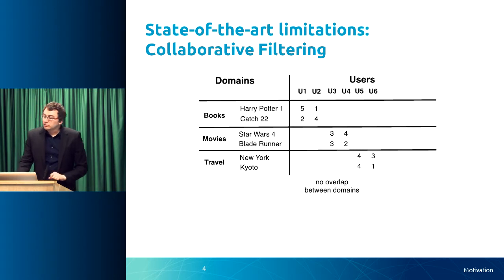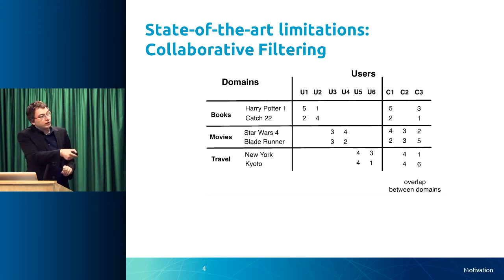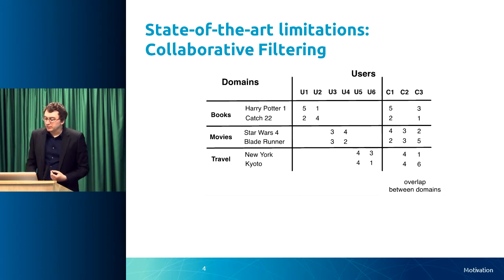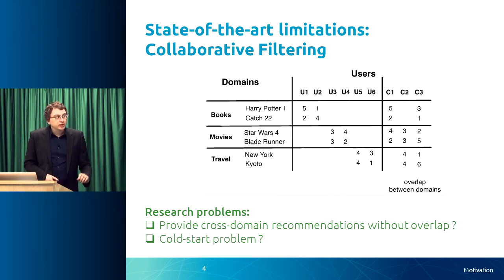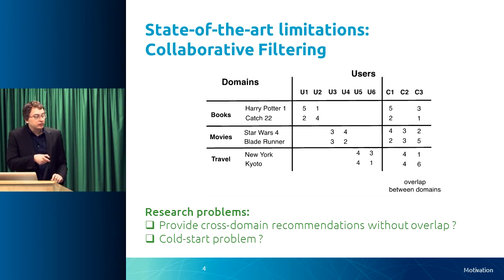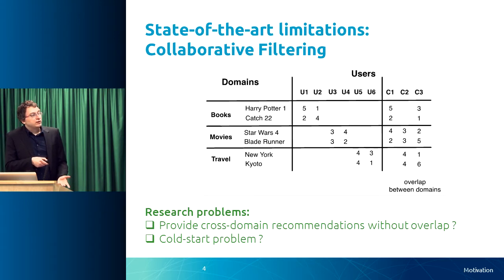What could change that is if users provided ratings from multiple domains — users one, two, and three overlapping different domains. But that kind of user profile data is hard to get today. So the first research problem is: how can we provide cross-domain recommendations without an overlap between domain rating data? The second problem is the cold start problem — there are many gaps in that matrix, creating rating sparsity, and for completely new users with no rated items, providing recommendations is also a challenge.